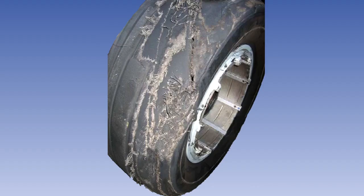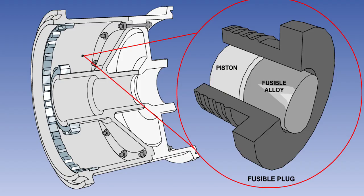Under extra hard braking conditions, the heat generated in the wheel, tyre and brake assembly can be sufficient to cause the pressure to rise to a level that the tyre cannot withstand, causing it to split — with possible catastrophic consequences for the aircraft. This is commonly known as a tyre blowout. To prevent a sudden blowout, fusible plugs or thermal plugs are fitted in some wheels with tubeless tyres.